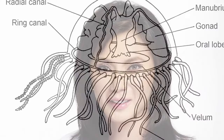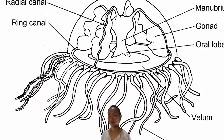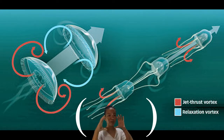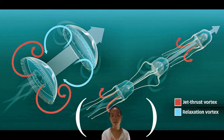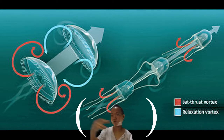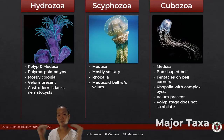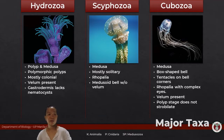The velum is an extension of the bell that projects inwards. Using physics — pressure equals force over area — when a medusa pushes water through the smaller hole created by the velum, greater pressure is produced, propelling the animal farther and faster. It's like partially covering a garden hose to make water shoot farther. That is why the velum is present in Hydrozoa but absent in Scyphozoa, which is why scyphozoans are so slow.